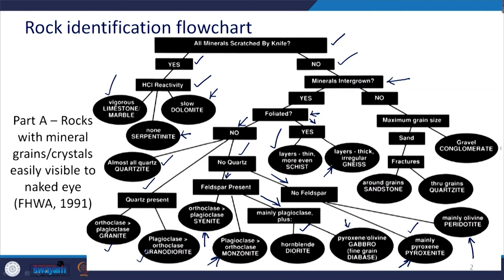If the minerals are not intergrown, we have to follow this path and see what is the maximum grain size. According to that, if you have gravel, we can identify that rock as conglomerate. If you have sand — the grain size for sand is less than that of gravel — we need to see whether fractures are around the grains; if so it is sandstone, and if through the grains, then it is quartzite.